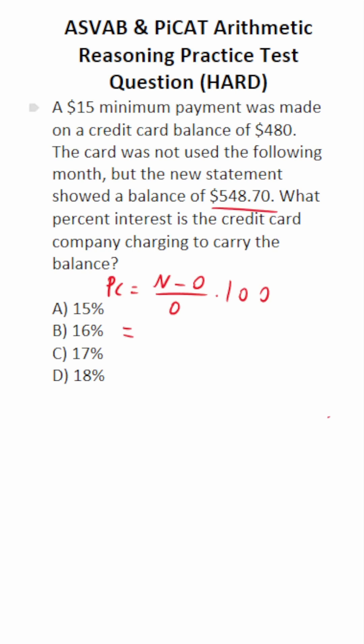What is the new value? It's right here, $548.70. What is the old value? Here we have to be very careful as to what we plug in. Some people would say it's $480. That's not correct. We made a $15 payment. So our old value is going to be $480 minus $15, which is $465.